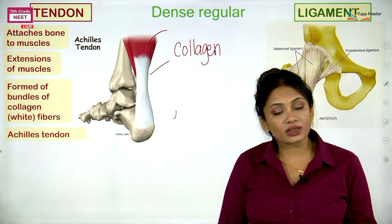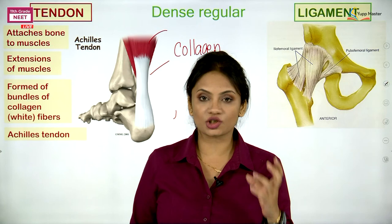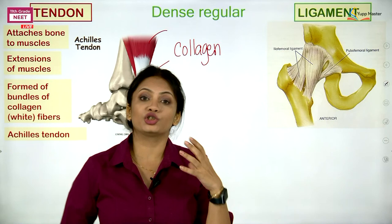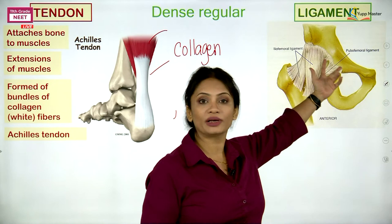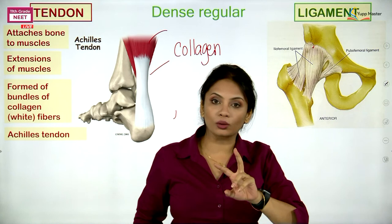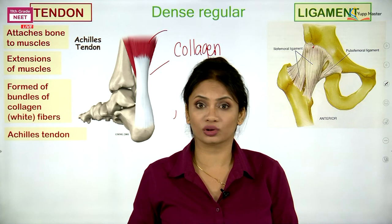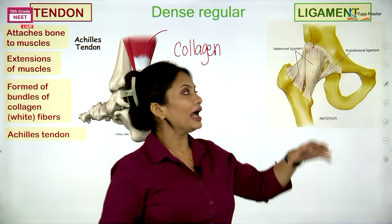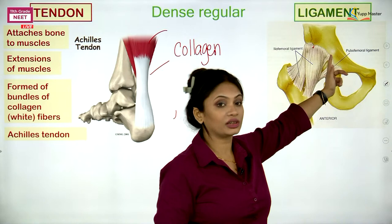Moving on to ligament: what is a ligament? A ligament is a structure which joins a bone to a bone. If we see the hip joint diagram, we have one hip bone and the thigh bone — both are very rigid structures. Whatever is joining them must provide flexibility, and that structure is the ligament, which helps join bone to bone.